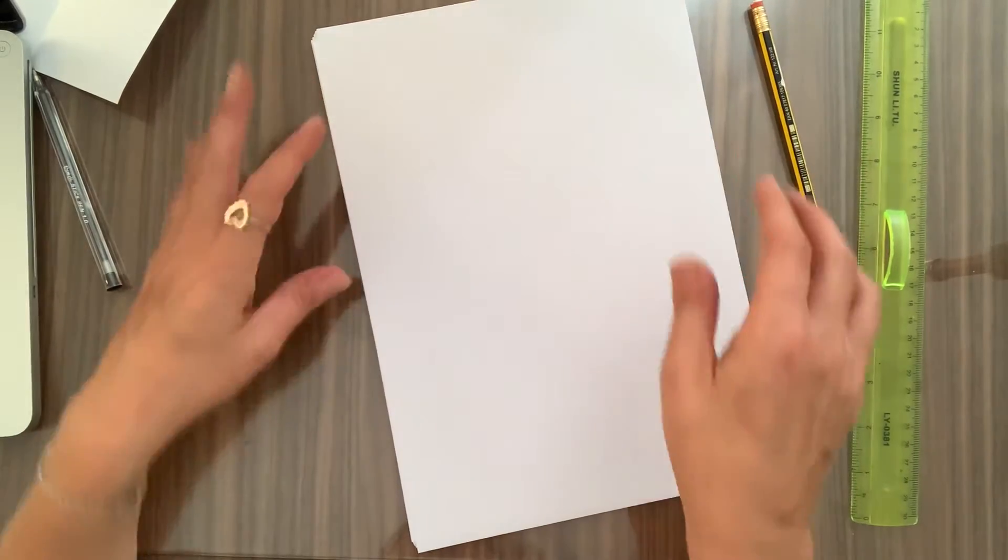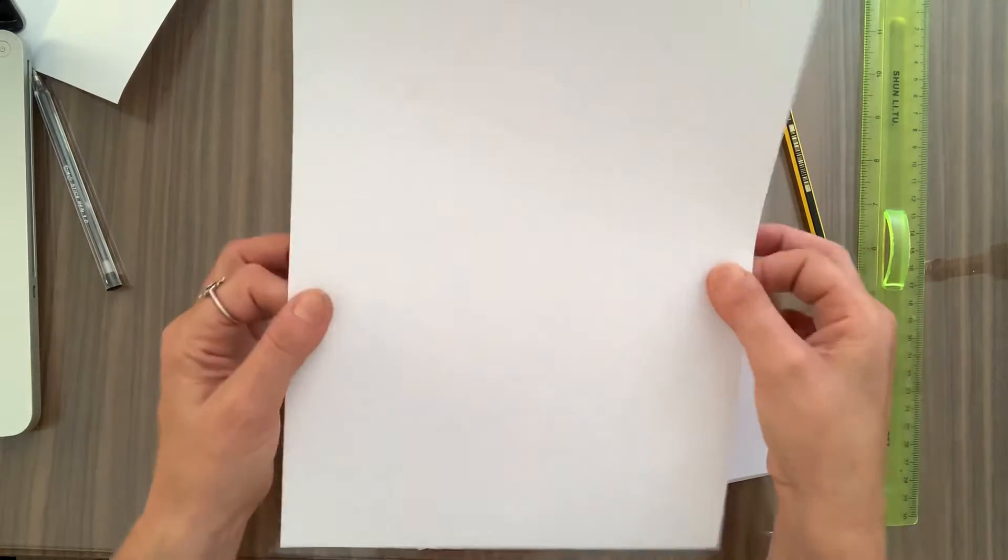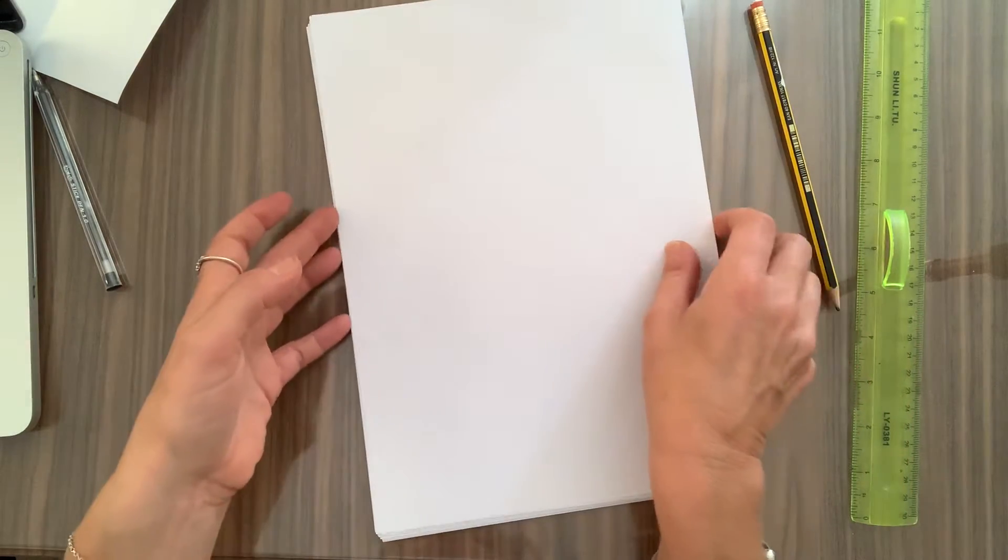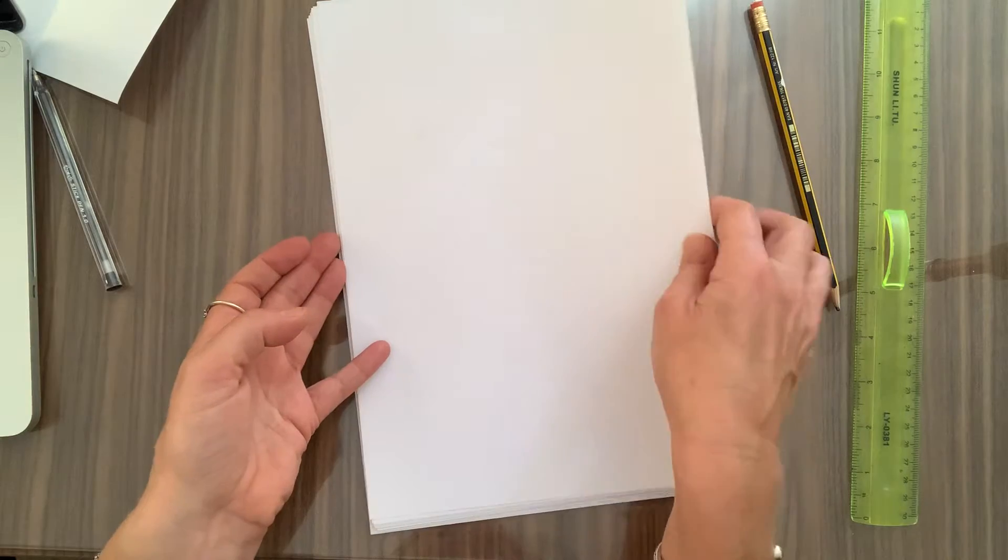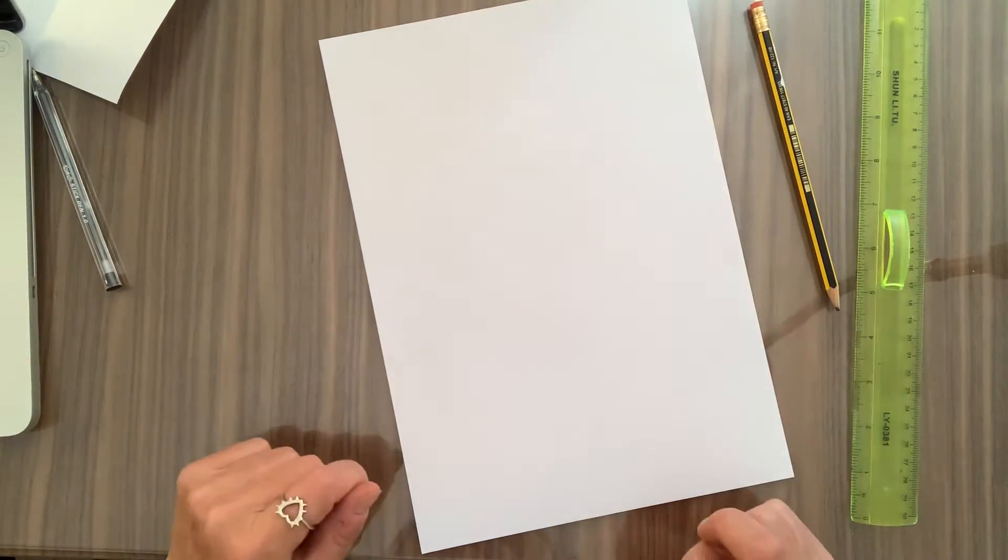So what you're going to do is you're going to get an A4 piece of paper, just a plain piece of photocopied paper is the best. If you've got your art sketchbook, which is a different size, you can do it in your art sketchbook if you like.